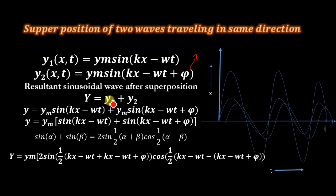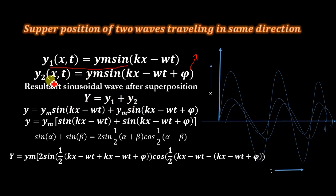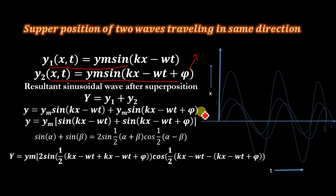When superposition occurs between y1 and y2, we get a resultant wave y equal to the sum of y1 and y2. Substituting the values, we get: y = ym·sin(kx − ωt) + ym·sin(kx − ωt + π).